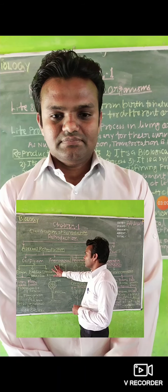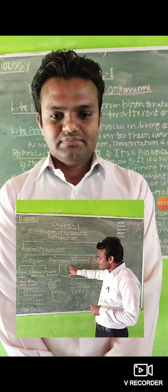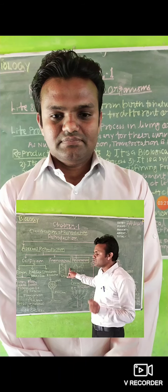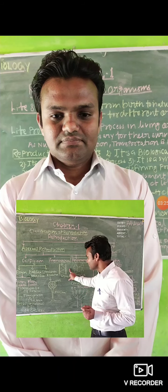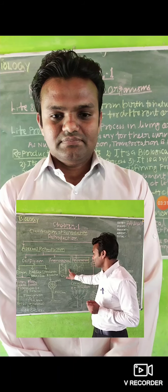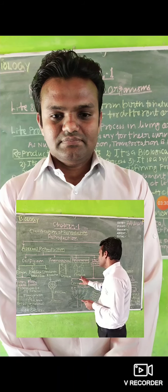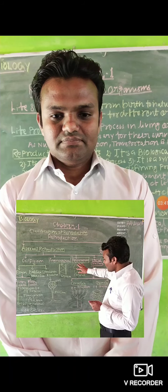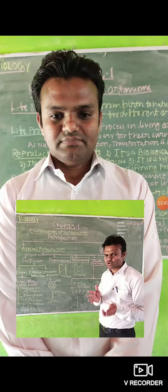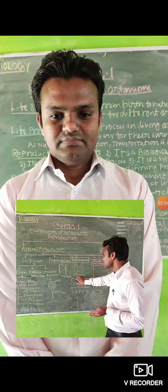Let us come to the second sub-classification of asexual reproduction, that is fragmentation. Fragmentation means the individual organism's body breaks into small fragments, and each fragment will become a new individual body. Fragmentation is common in spirogyra. The third sub-classification is regeneration, common in planaria. If planaria breaks down into two, three, or four pieces, each piece becomes a new individual organism.